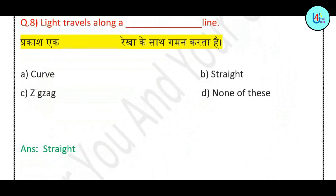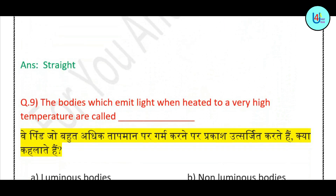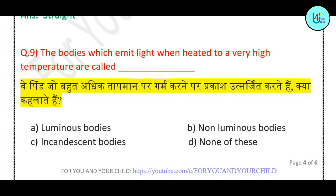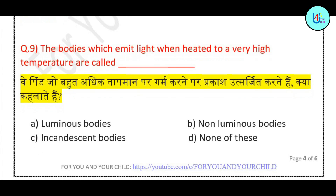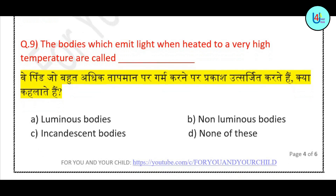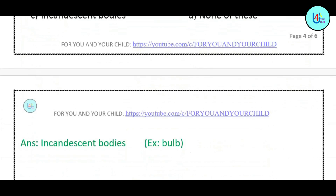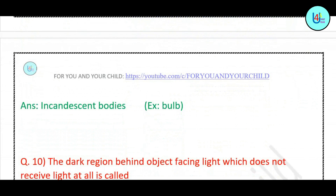Question number 9: The bodies which emit light when heated to a very high temperature are called — luminous bodies, non-luminous bodies, incandescent bodies, or none of these? Correct answer is: incandescent bodies. Example is a bulb.